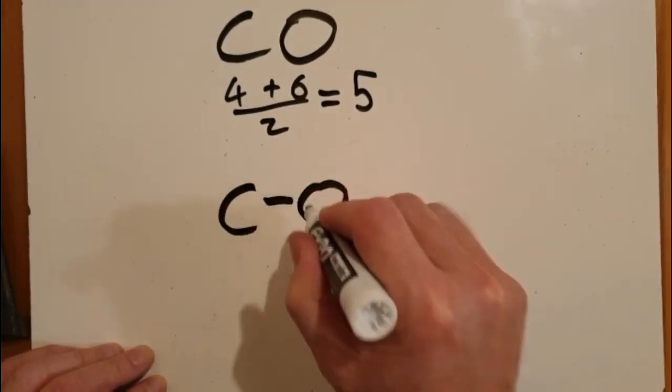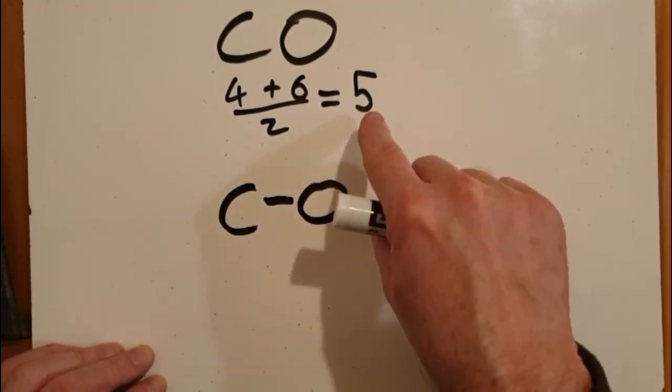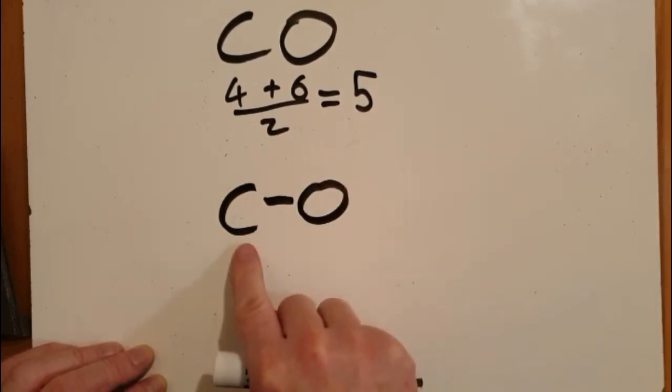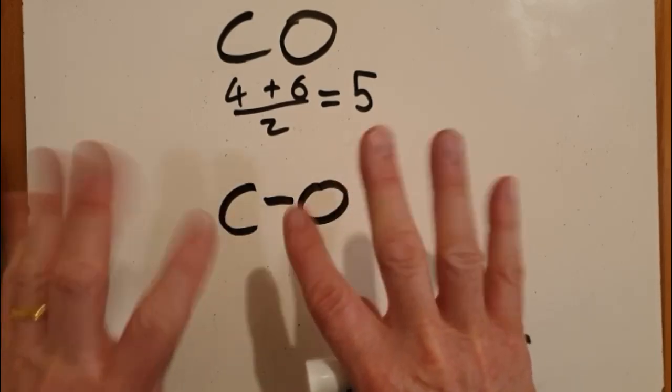So write out the atoms and join them up with, well, initially one bond to start with, that's a pair of electrons. I've got four more electron pairs to distribute. And remember each atom has to have in total four pairs of electrons around it, the so-called stable octet.